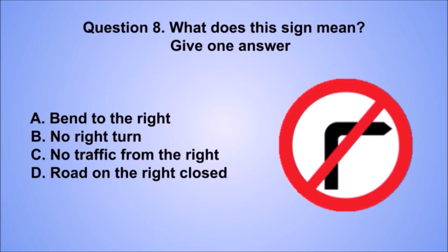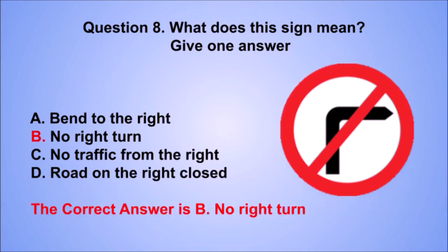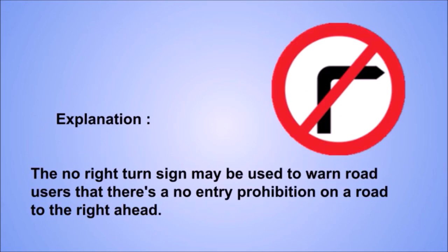Question 8. What does this sign mean? The correct answer is B: No right turn. The no right turn sign may be used to warn road users that there's a no entry prohibition on a road to the right ahead.